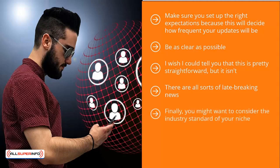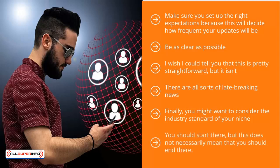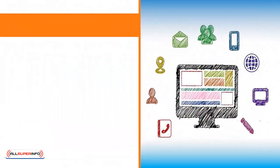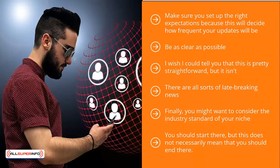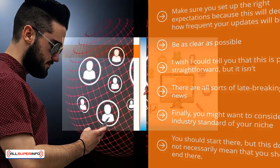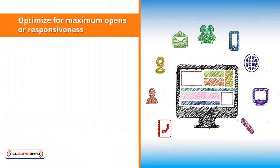Finally, you might want to consider the industry standard of your niche. If you sign up for your competitor's list and notice that they tend to have the same schedule for their updates, you might want to start with that schedule. However, this does not mean you should end there. Use their schedule as a starting base, then tweak your email schedules based on the actual behavior of your list members.